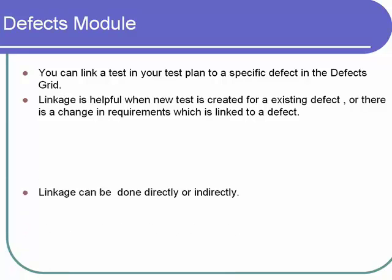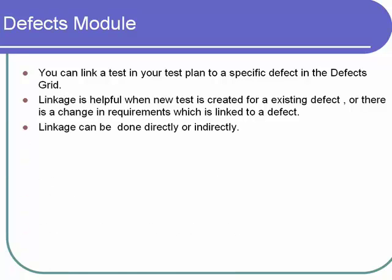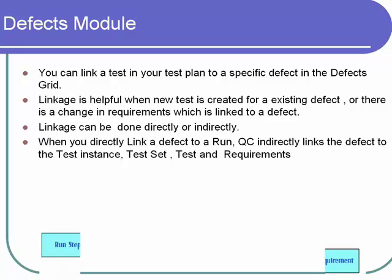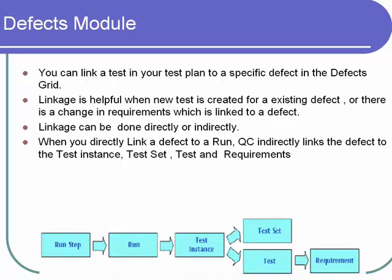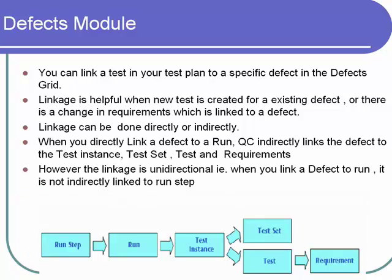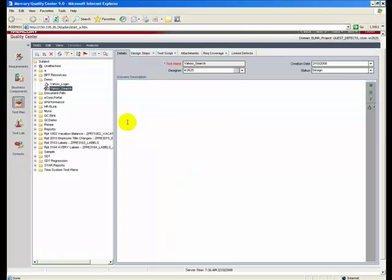Linkage can be done directly or indirectly. When you directly link a defect to a run, QC indirectly links the defect to the test instance, test set, test, and requirements. However, the linkage is unidirectional — in the forward direction only, never in the backward direction.